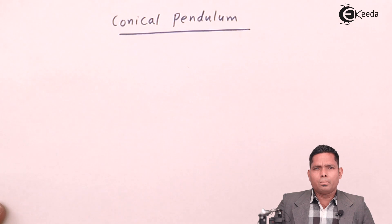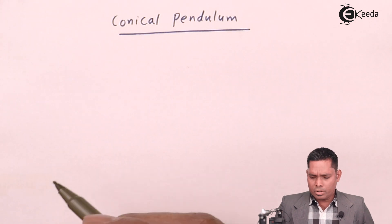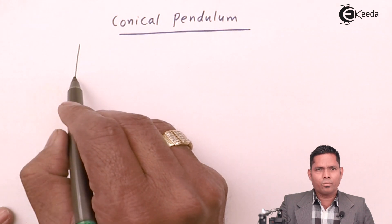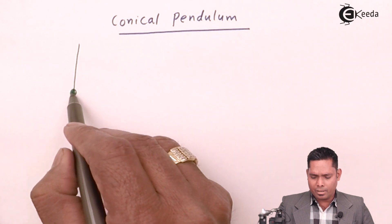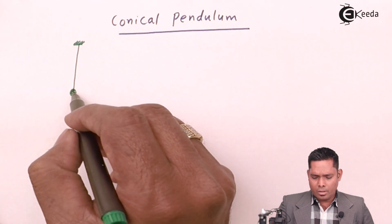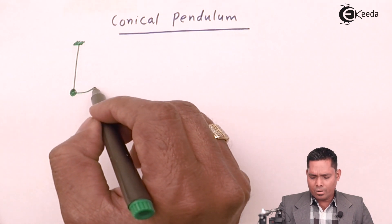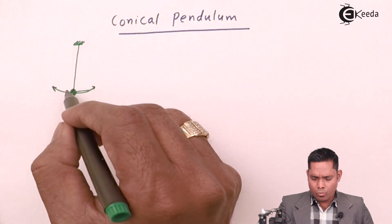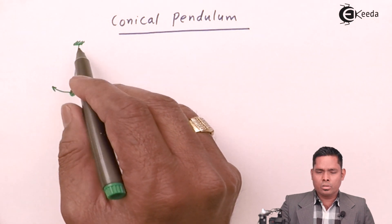Before we discuss the conical pendulum, we must know what a simple pendulum is. A simple pendulum has a straight string with a heavy spherical bob attached to one end and the other end fixed. The bob is displaced slightly to one side and released, and it moves to and fro.